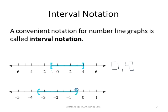In the second example, we have parentheses at each end and that means you do not include the end points. On this one, the left end point looks like it's at negative 3 and a half and the right end point looks like it's at negative 1 half.